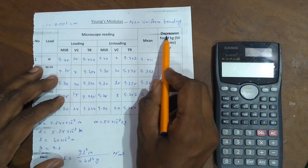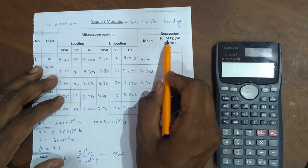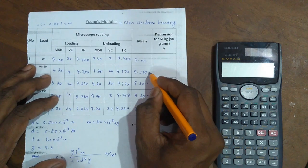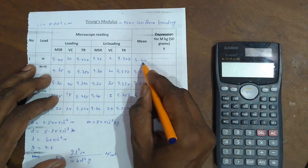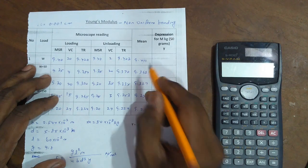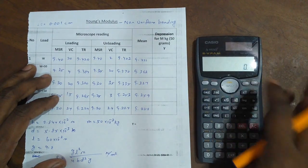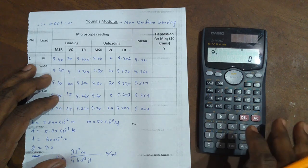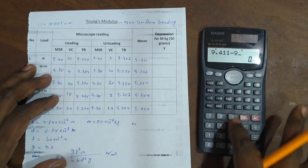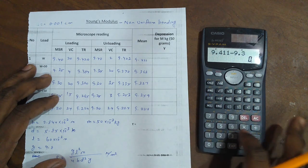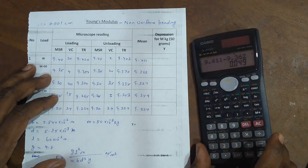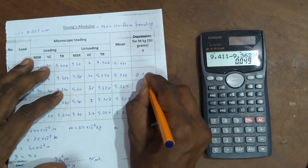Finally, calculate the depression for m kgs. In this case, m for depressions. For depression for 50 grams: 9.411 minus 9.362. These are called 0.411. So 9.411 minus 9.362, the answer is 0.049.